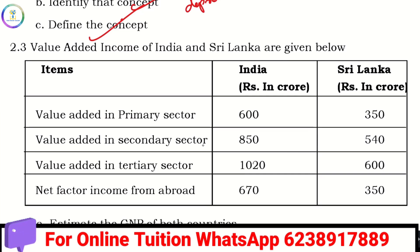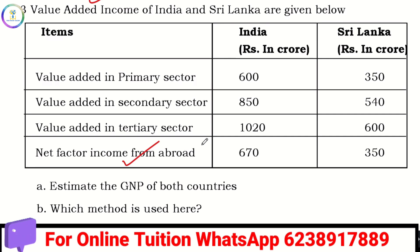In the primary sector, secondary sector, and tertiary sector, we add values and net factors from abroad. Then we call it GNP. We add everything — the total is 3,142 and we also add values of 1,840.